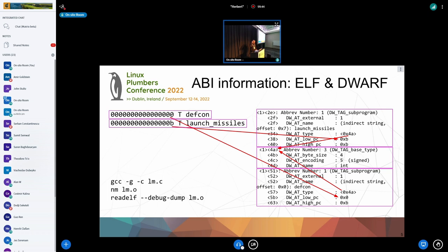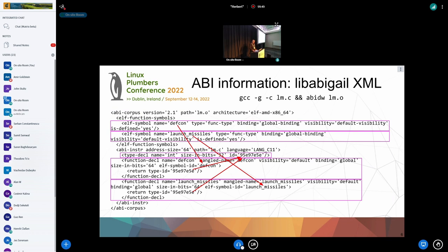LibAbigail processes ELF and DWARF and produces an XML representation of ABIs. That's what that looks like for the same program. We have a couple of nodes for symbols, a couple of nodes for function declarations, and the int type there in the middle. There are edges expressed through XML attributes. But in all of the documentation for BTF, CTF, LibAbigail, and DWARF, the word graph is only mentioned once. That's in the DWARF documentation, which helpfully says that the DWARF tree is actually a graph.